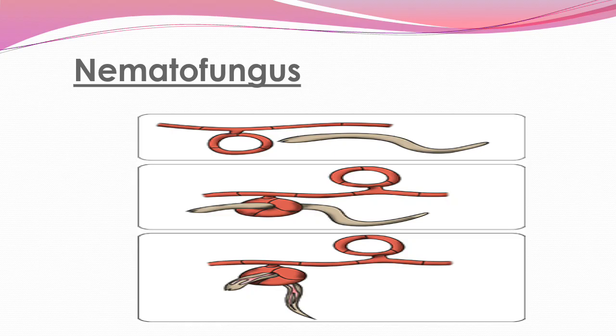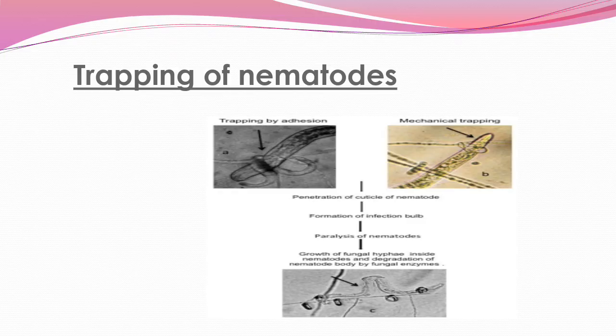You can see here the structure of nematodes, the nematode fungus, and the trapping of nematodes. The mechanism of trapping includes penetration of the cuticle of nematodes, formation of an infection bulb, and paralysis of nematodes.